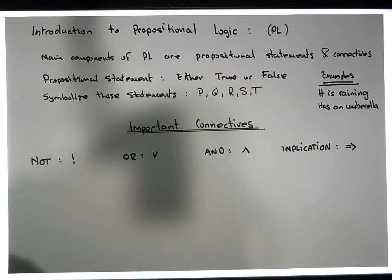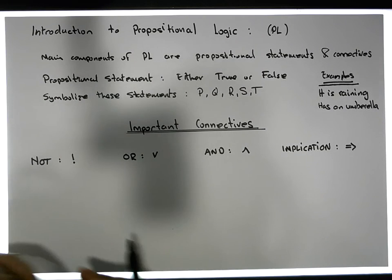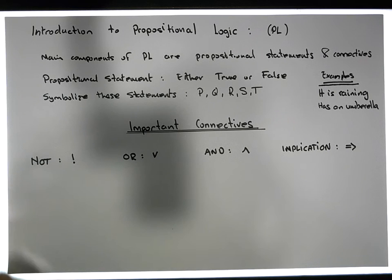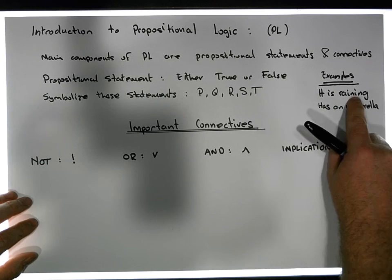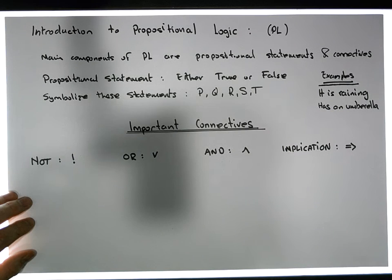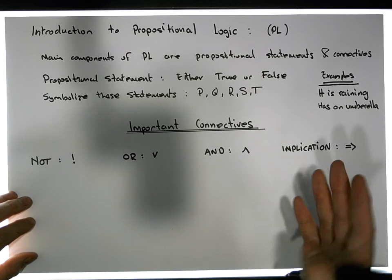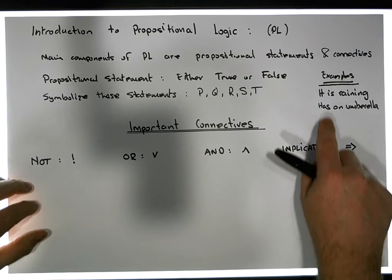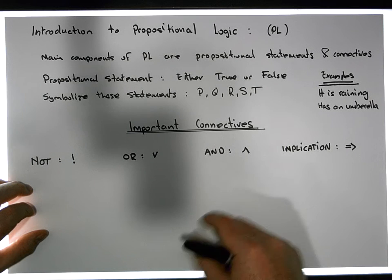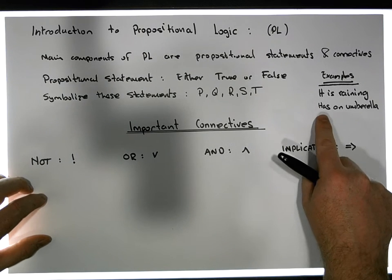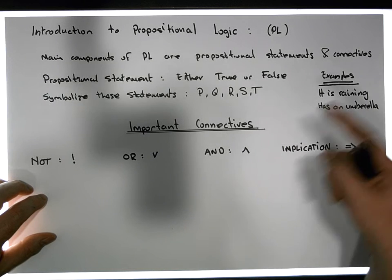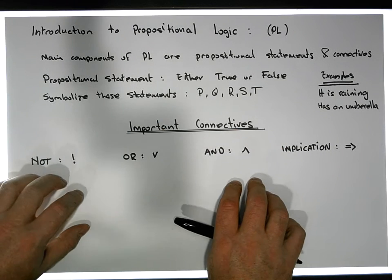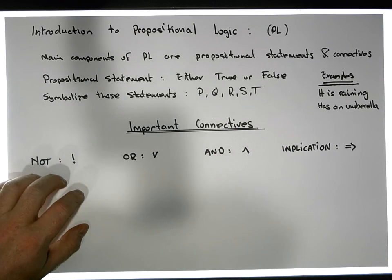Now, there are other statements that can be created that are composed of these particular propositions. For example, in English I could say 'it is raining and I have an umbrella.' That's a propositional statement that's either true or false. It's made up of two atomic statements — the first being 'it is raining,' connected together with the connective AND, which is followed by 'has an umbrella.'